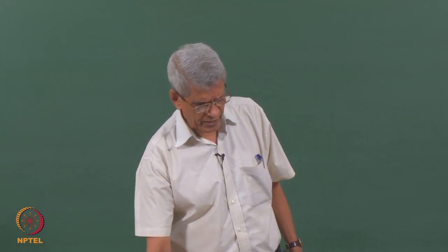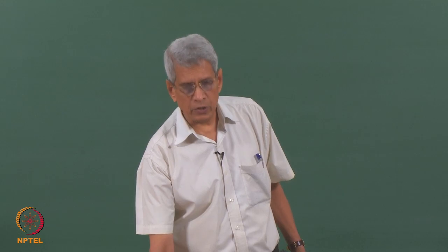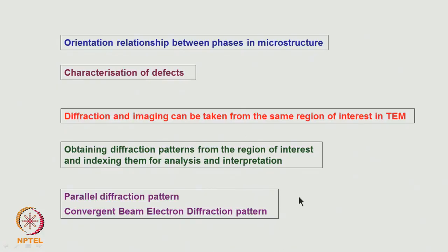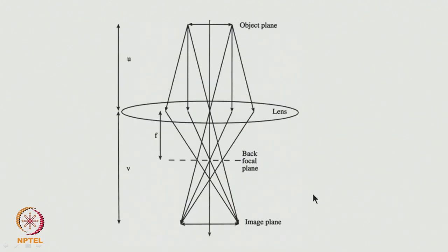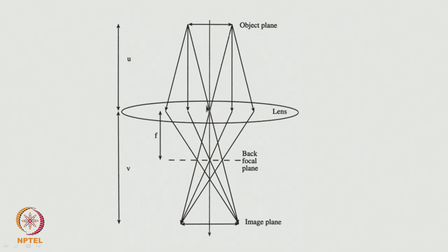Parallel diffraction is what is normally used in a conventional electron microscope to get information about how the phases are distributed. We have discussed these aspects already, but just for completeness I will briefly recall them before we go further to understand how to index the diffraction pattern.